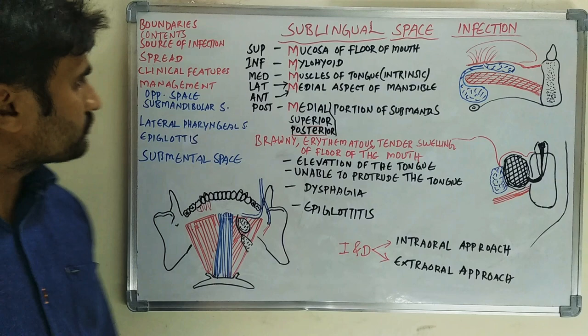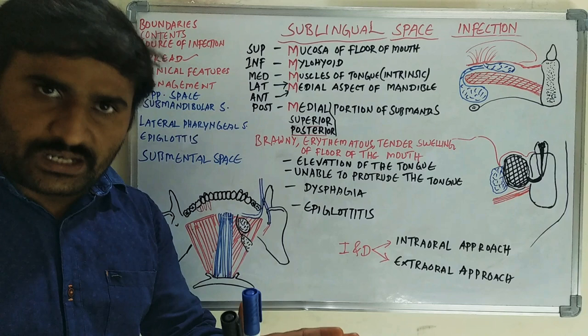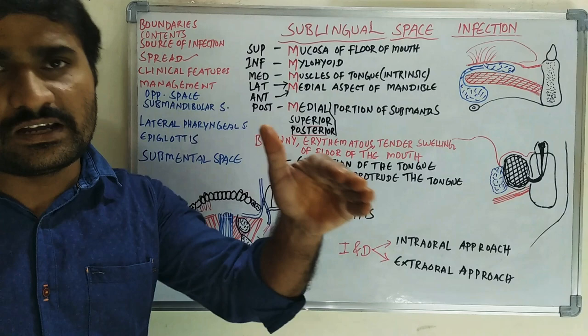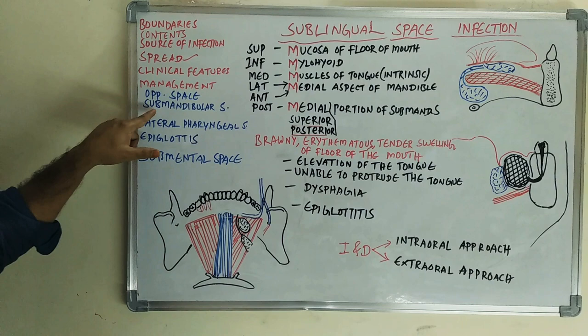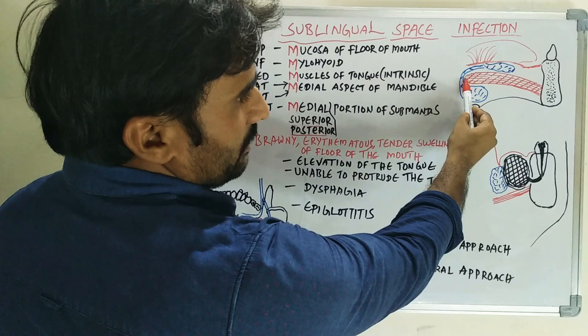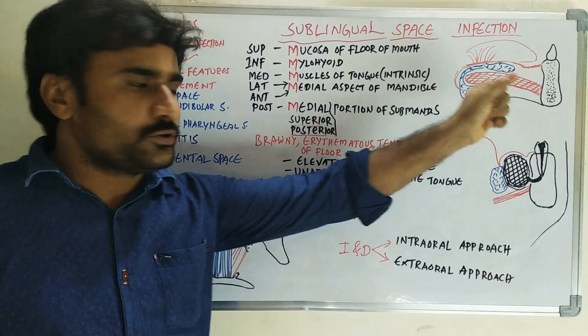Regarding the spread: from the sublingual space, infection can spread to the opposite sublingual space, as only loose connective tissue separates the two sides. Usually both sublingual spaces are affected simultaneously. Infection can also spread to the submandibular space, because the sublingual and submandibular spaces are connected at the posterior border of the mylohyoid muscle, allowing infection to cross easily.